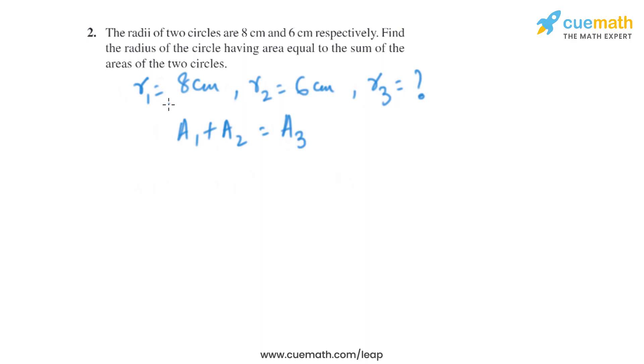So it becomes π r1² plus π r2² equals π r3². From here we will get the value of r3².